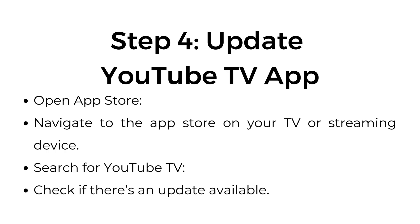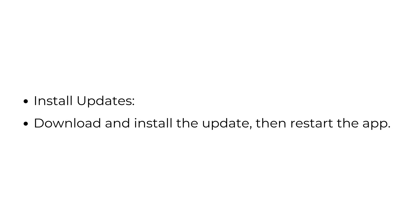Step 4: Update the YouTube TV app. Open the App Store and navigate to it on your TV or streaming device. Search for YouTube TV and check if there is an update available. Install updates by downloading and installing the update, then restart the app.